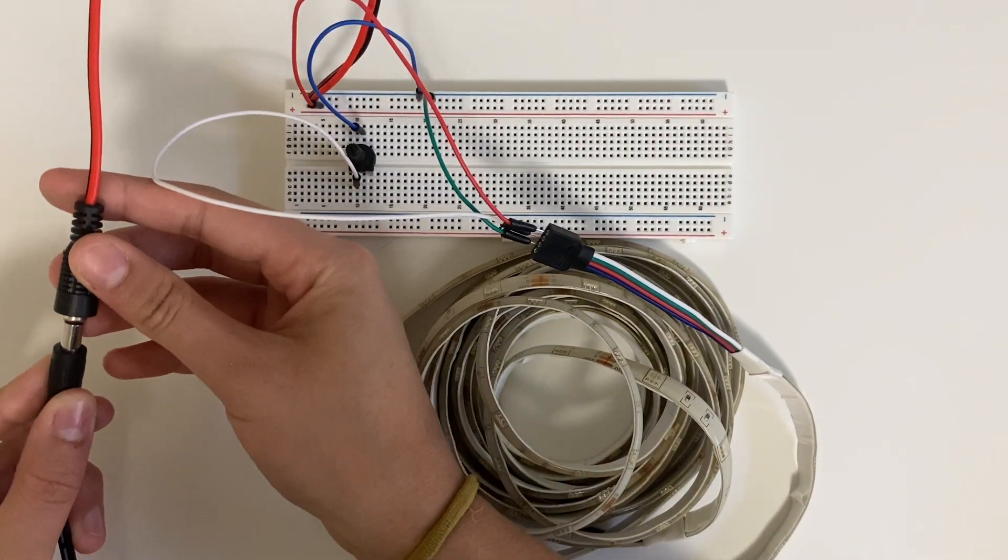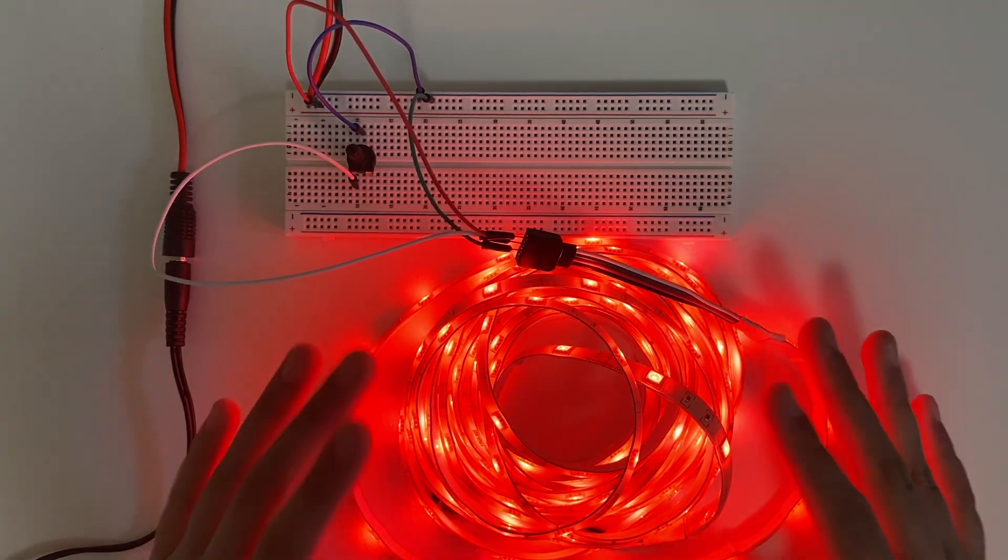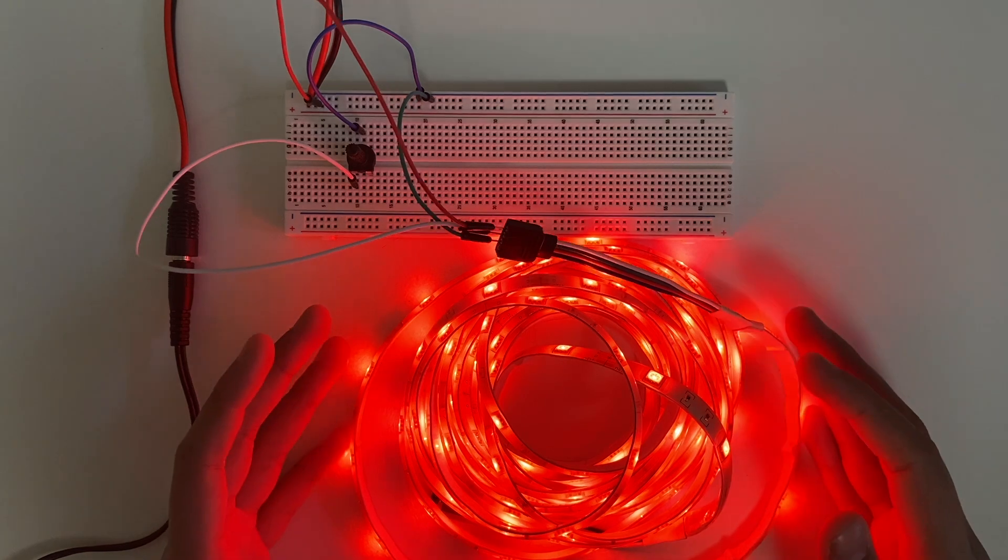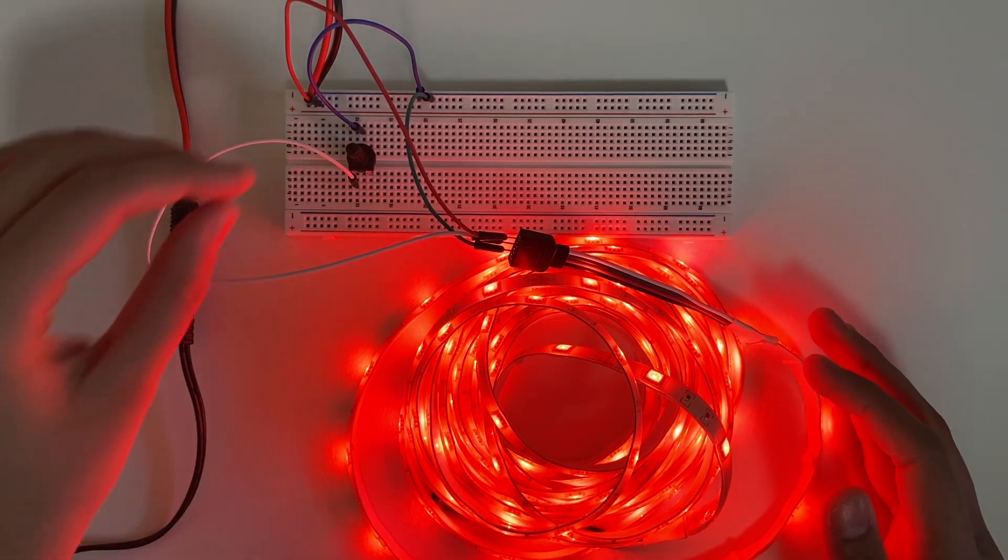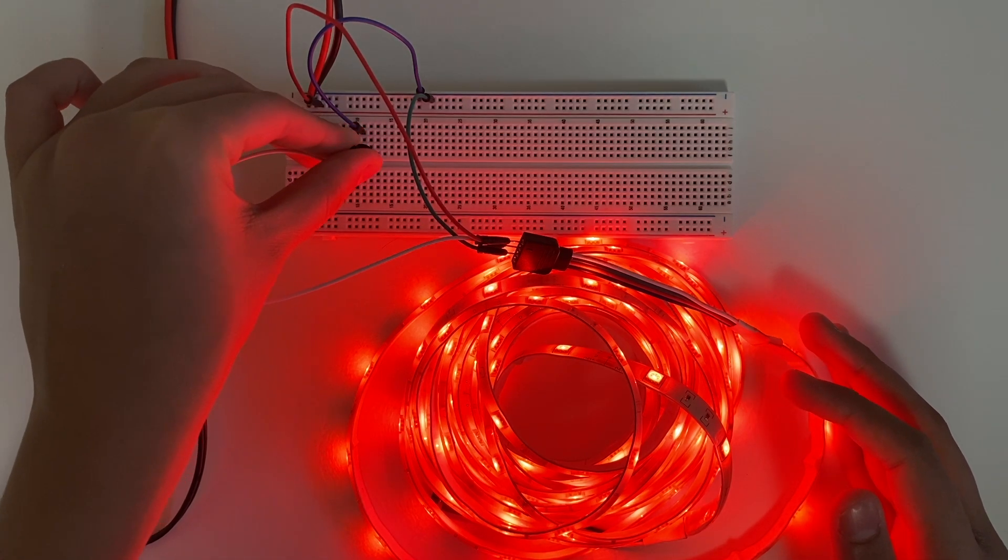So as I said, red is constant, it's going to stay like this for the rest of the thing. So I have red, and now as I slowly start to turn the potentiometer, you'll slowly start to see green.